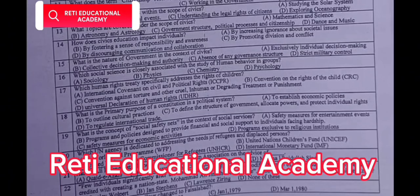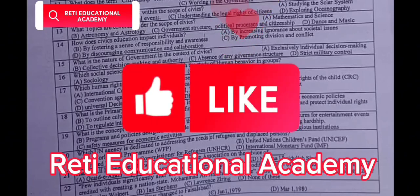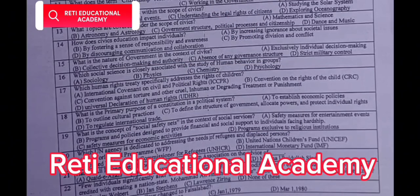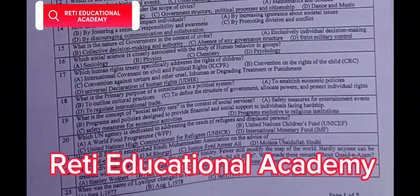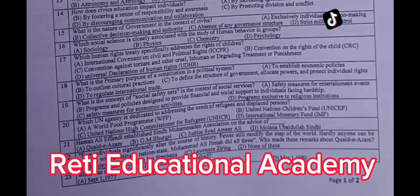Question number fifteen: What is the nature of government in the context of civics? A. Exclusively individual decision-making, B. Collective decision-making and authority, C. Absence of any governance structure, D. Strict military control. The correct answer is B, collective decision-making and authority. Question number sixteen: Which social science is closely associated with the study of human behavior in groups? A. Sociology, B. Physics, C. Chemistry, D. Psychology. The correct answer is D, Psychology. Question number seventeen: Which human rights treaty specializes in the rights of children? A. International Convention on Civil and Political Rights, B. Convention on the Rights of the Child, C. Convention against Torture, D. Universal Declaration of Human Rights. The correct answer is B, Convention on the Rights of the Child.